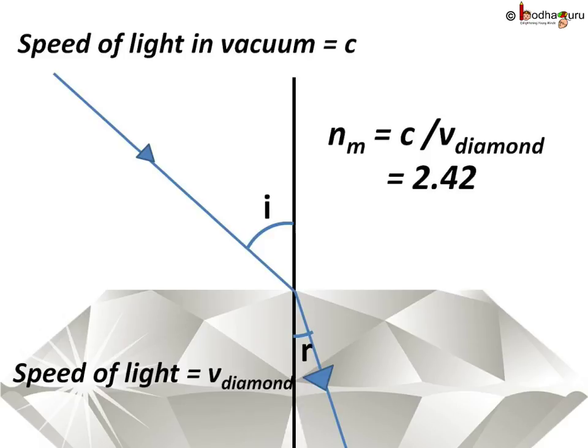Say light is entering into the diamond from vacuum. The refractive index of the second medium with respect to the first is equal to sin i divided by sin r, which is 2.42 here. So sin i / sin r = 2.42, meaning the light ray bends a lot.